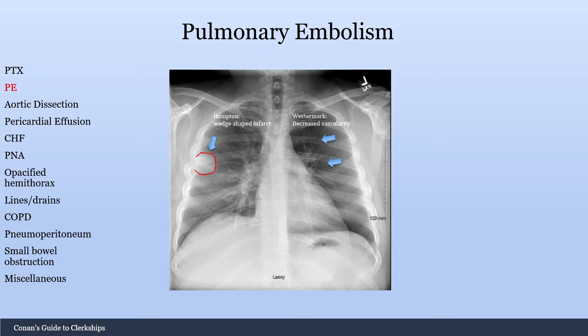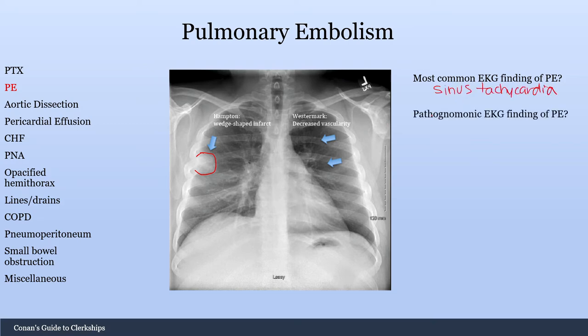However, these two findings are not very sensitive for pulmonary embolism, so in a majority of patients you will not see these chest X-ray findings. What is the most common EKG finding of pulmonary embolism? The answer is sinus tachycardia. Most people will immediately jump to the S1Q3T3, but this is actually not all that common in patients with PE — the most common EKG finding would be sinus tachycardia.